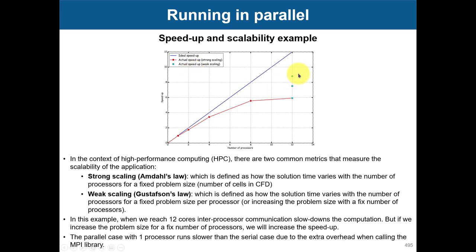When you are running in parallel, you get something like this curve. These are known as strong scaling and weak scaling — that is Amdahl's law and Gustafson's law. Strong scaling means you fix the problem size, increase the number of cores, and measure the speedup. As you increase processors it runs faster, but at some point you reach a limit where it is not going to run faster — in this case at 12 cores. If you double the number of cores beyond that, performance stays flat or goes down, because inter-processor communication now dominates. Not necessarily putting 1 million processors will make it run faster.